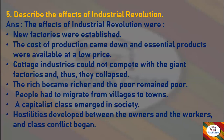Next: Describe the effects of the industrial revolution. Answer: The effects of the industrial revolution were — new factories were established; the cost of production came down and essential products were available at a low price; cottage industries could not compete with the giant factories and thus they collapsed; the rich became richer and the poor remained poor; people had to migrate from villages to towns; a capitalist class emerged in society; and hostilities developed between the owners and the workers, and class conflict began.